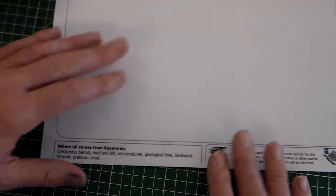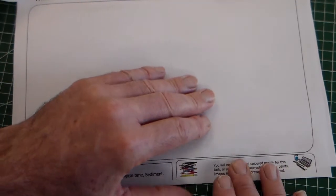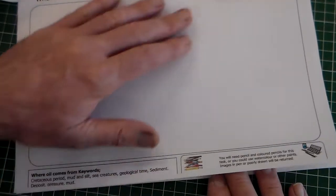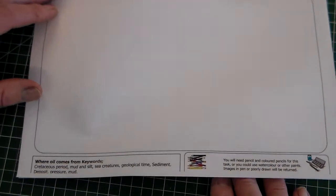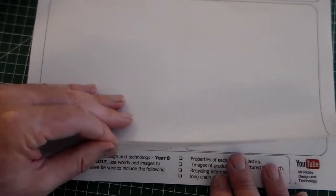We've just got some keywords down the bottom here. Remember this needs completed in full colour in this area here. So that's homework 3, plastics where oil comes from.